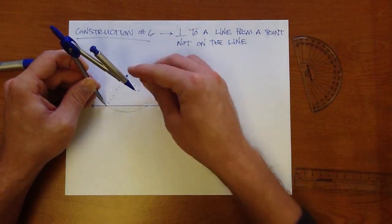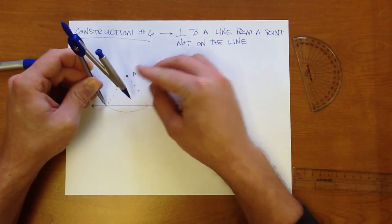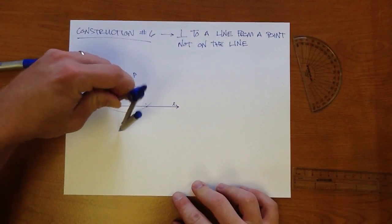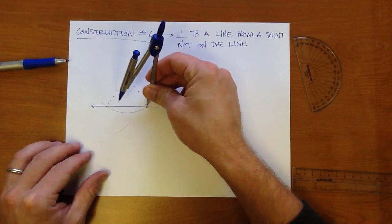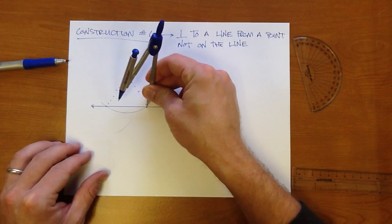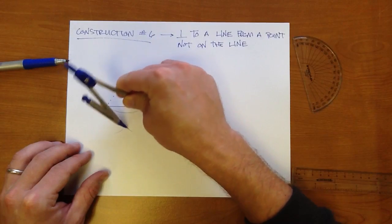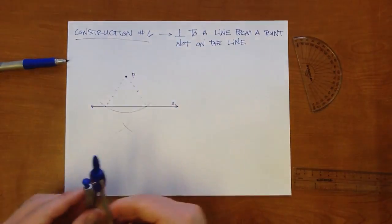So starting on your one point of intersection, make sure you have an arc length that's over halfway. Strike an arc below. Go to your other point. Use that as a center. Make sure your point sticks. Strike an arc again below.